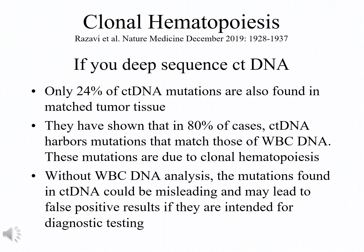In a recent study by Razavi et al. in Nature Medicine, it was revealed that only 24% of circulating tumor DNA mutations are also found in matched tumor tissue, and in 80% of cases, the circulating tumor DNA harbors mutations that match those of white blood cell DNA — mutations due to clonal hematopoiesis, not cancer. One way to alleviate this important limitation is to also do sequencing of white blood cell DNA and compare those mutations to exclude or rule in the presence of mutations in non-white blood cell DNA.